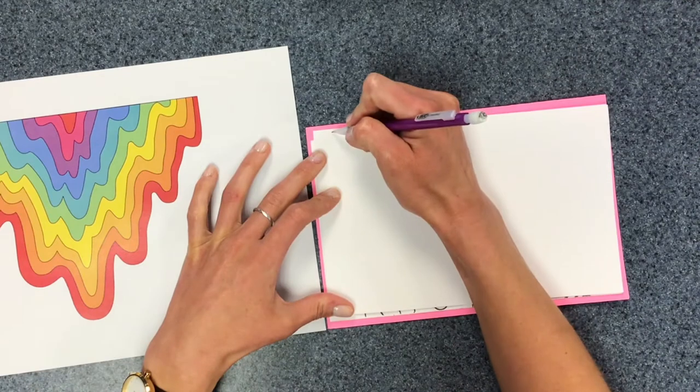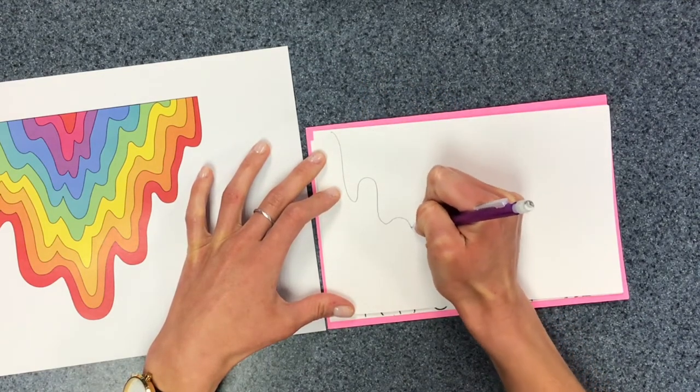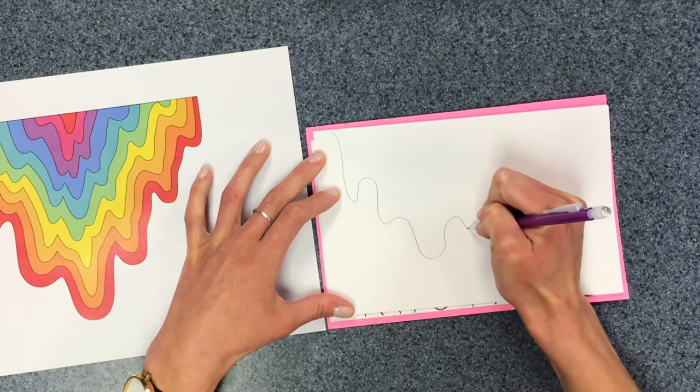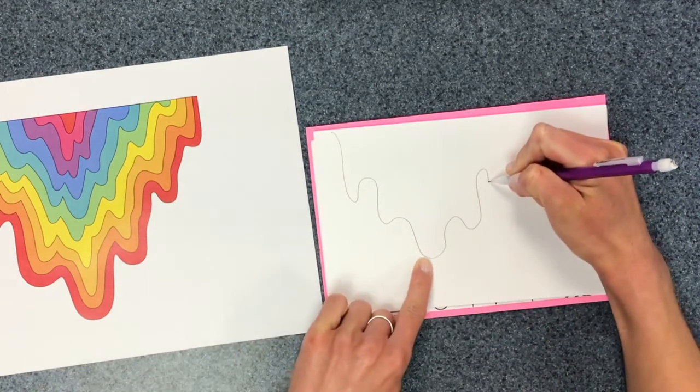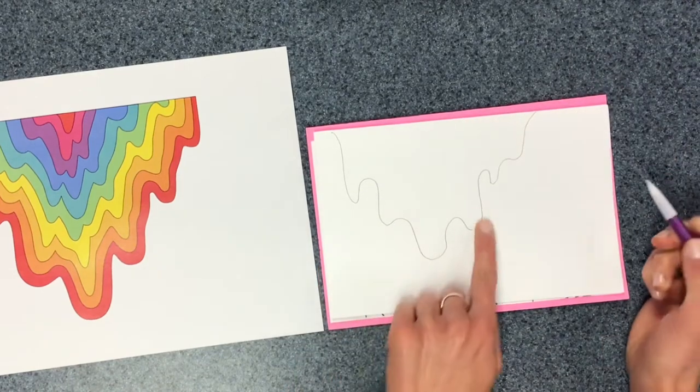I'm just going to start with a curvy, drippy line, and I'm working fairly slowly. So some of my drips are shorter, some are longer.